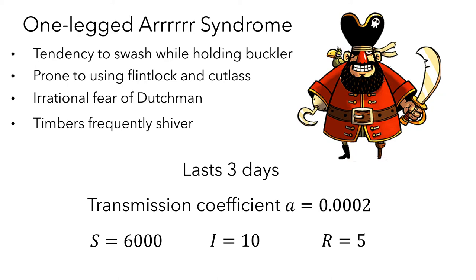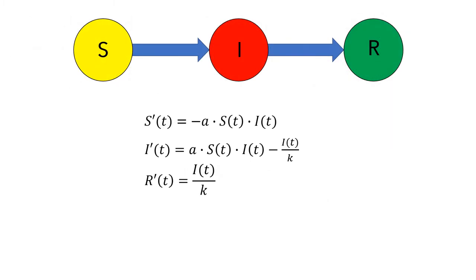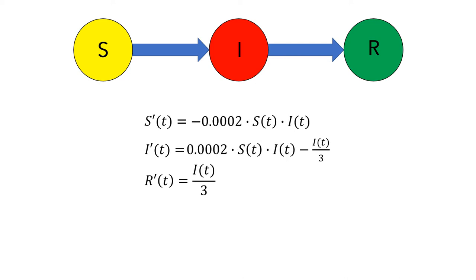So let's build our SIR model. In these equations, a is the transmission coefficient and k is the number of days the infection lasts. We can substitute the values we know for a and k. For this model to work, we'll need to assume that one-third of the infected group moves to the removed group each day.